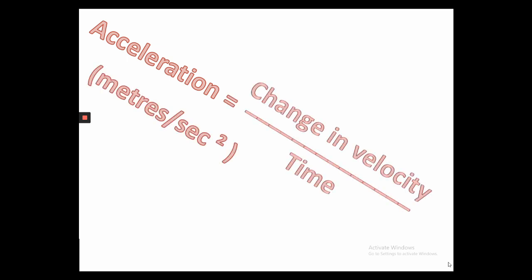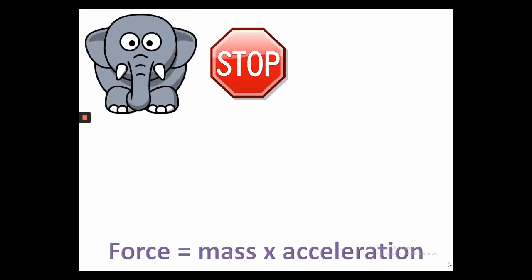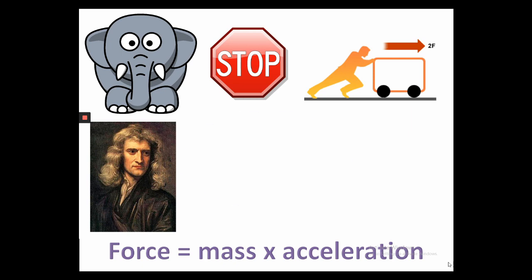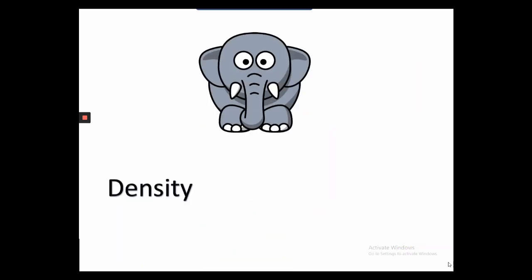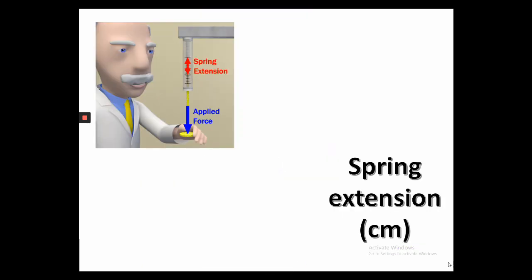With the units you must take care: acceleration meters per second squared. Heavy things are hard to stop or move away. Remember Isaac said F equals MA. Density is heaviness in a certain space. It's mass over volume to make the scientific case.